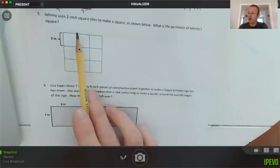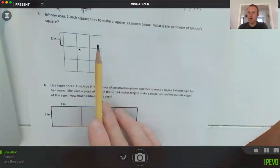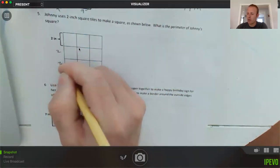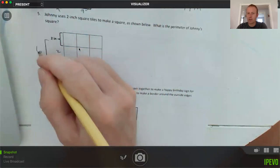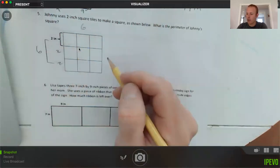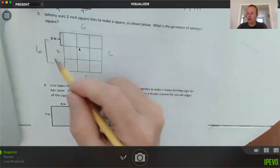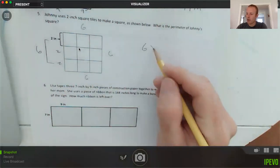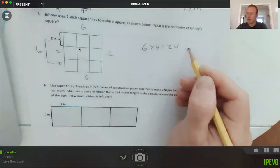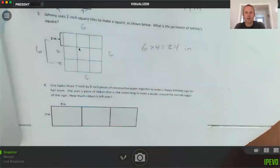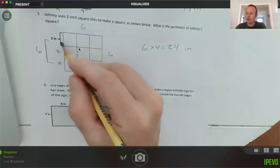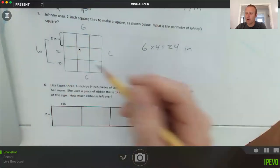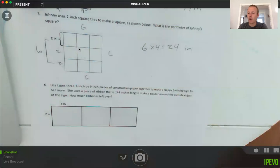Johnny used two inch square tiles to make squares as shown below. What is the perimeter of Johnny's square? So two, two, two—I'll say that this is all six, which means this is six, this is six, and this is six, right? Each side is really six. Six times four equals 24 inches. That one's probably the most straightforward one other than the first one on the whole worksheet. So you just have to know that that's two, this is two, that's two—they're all the same. Two, four, six. And since it's a square, each side is the same and you can just multiply by four.